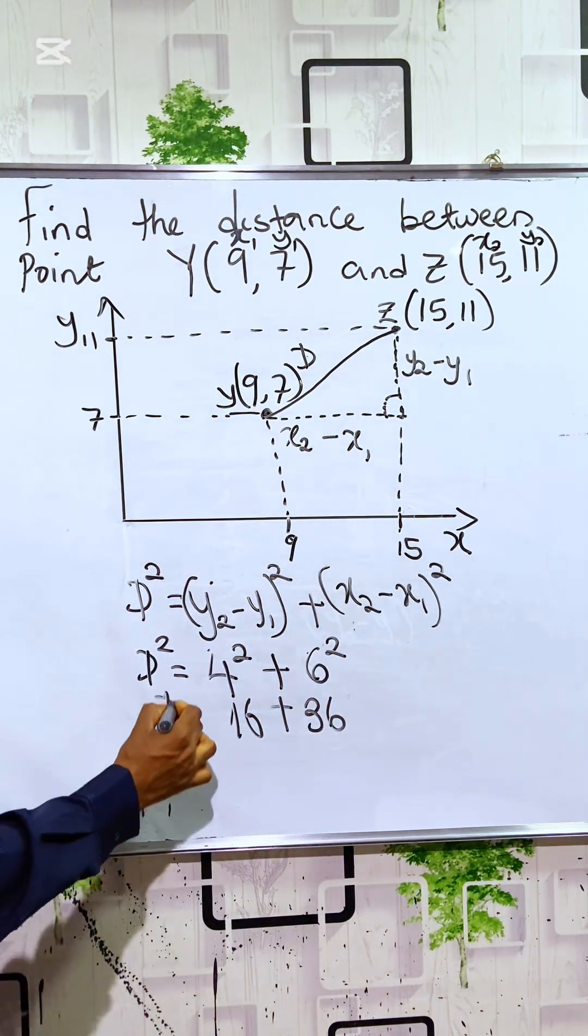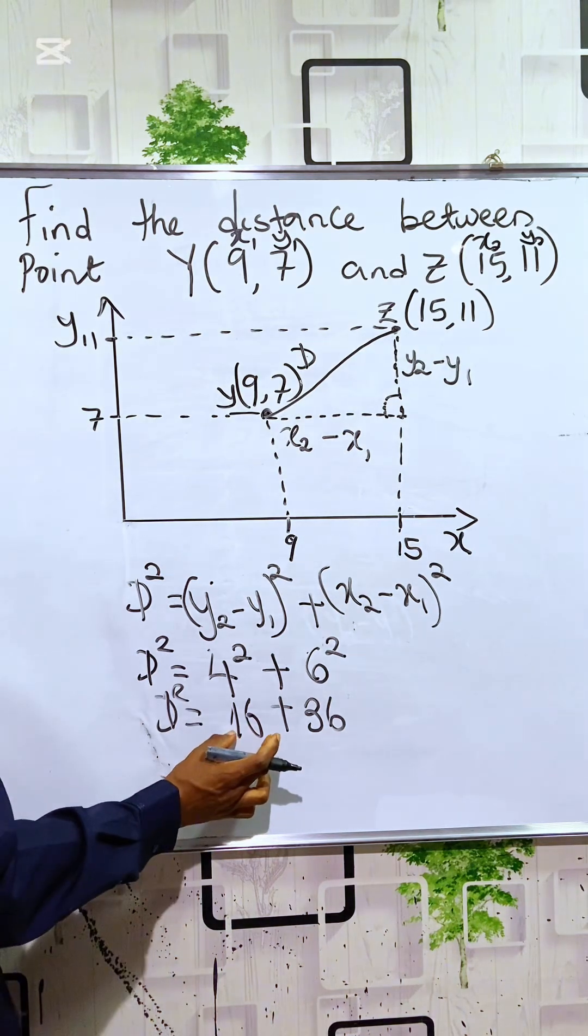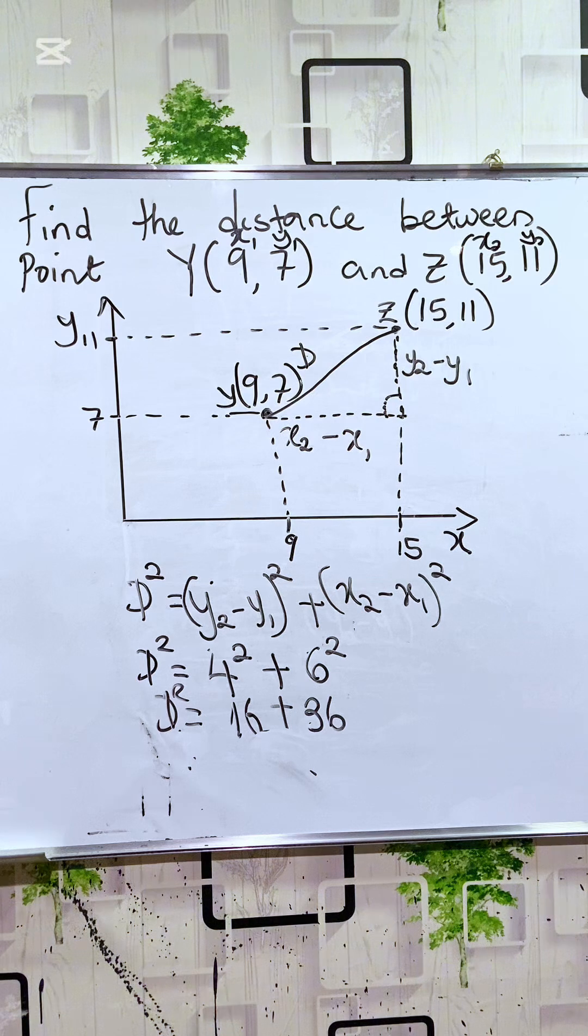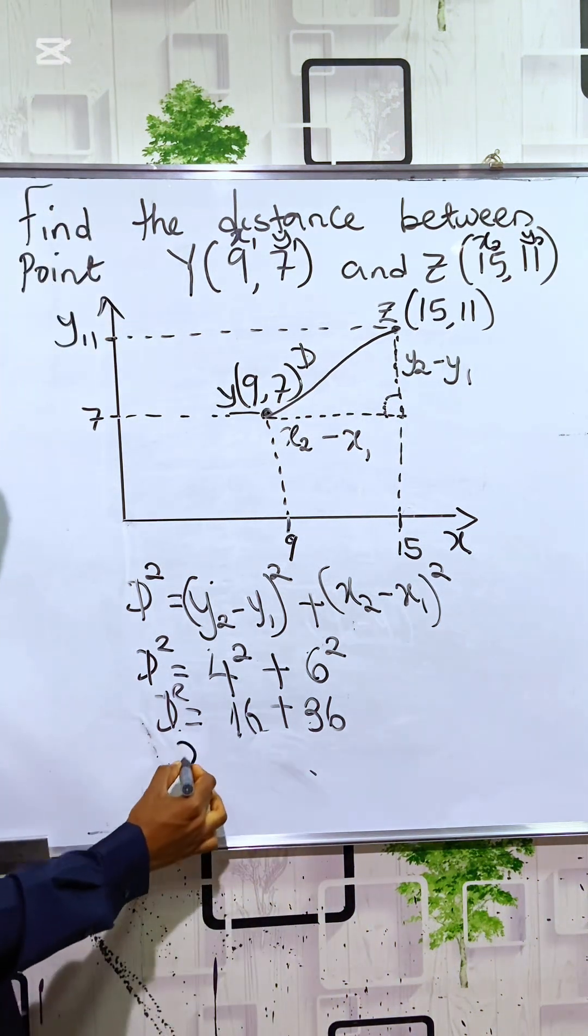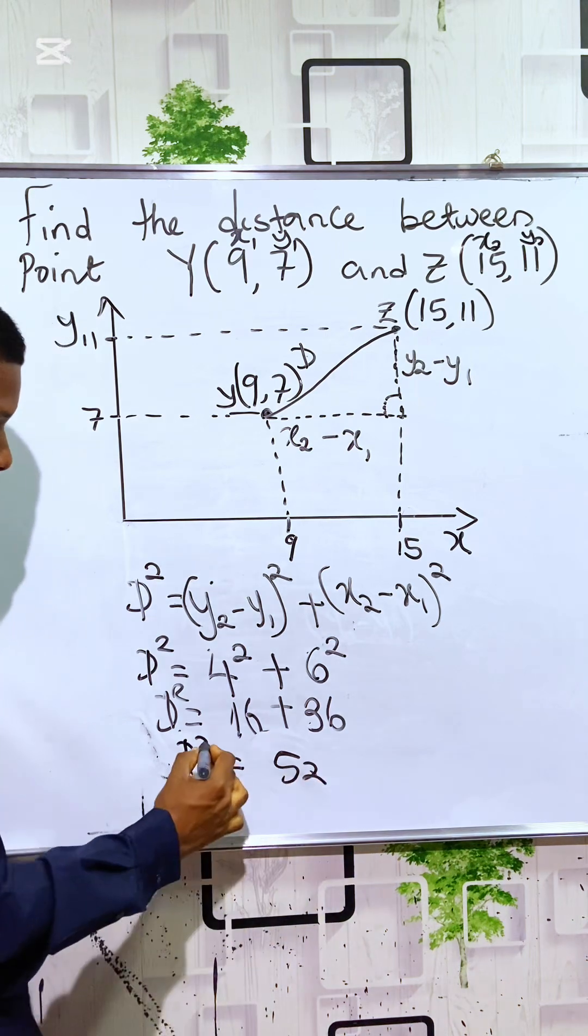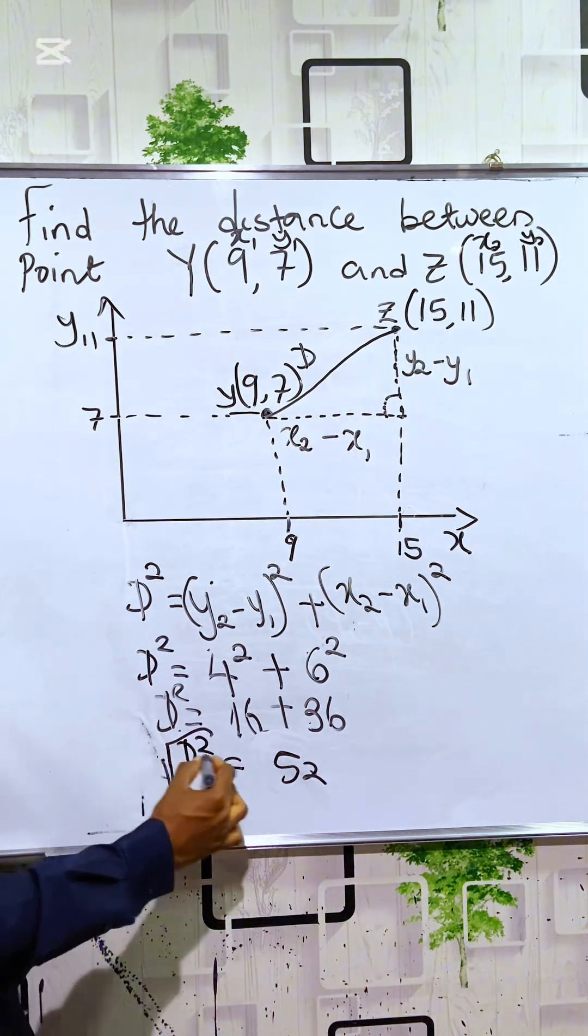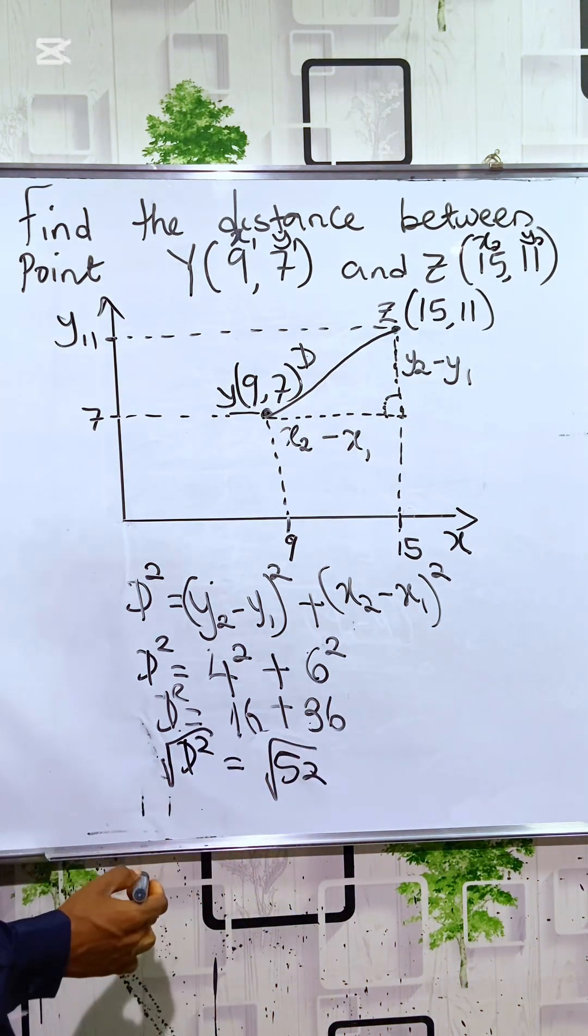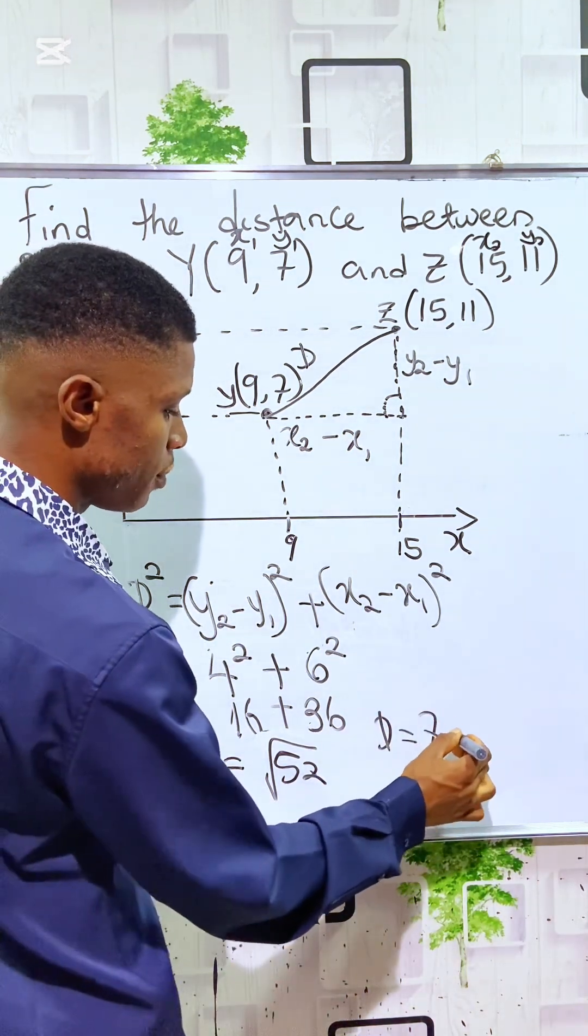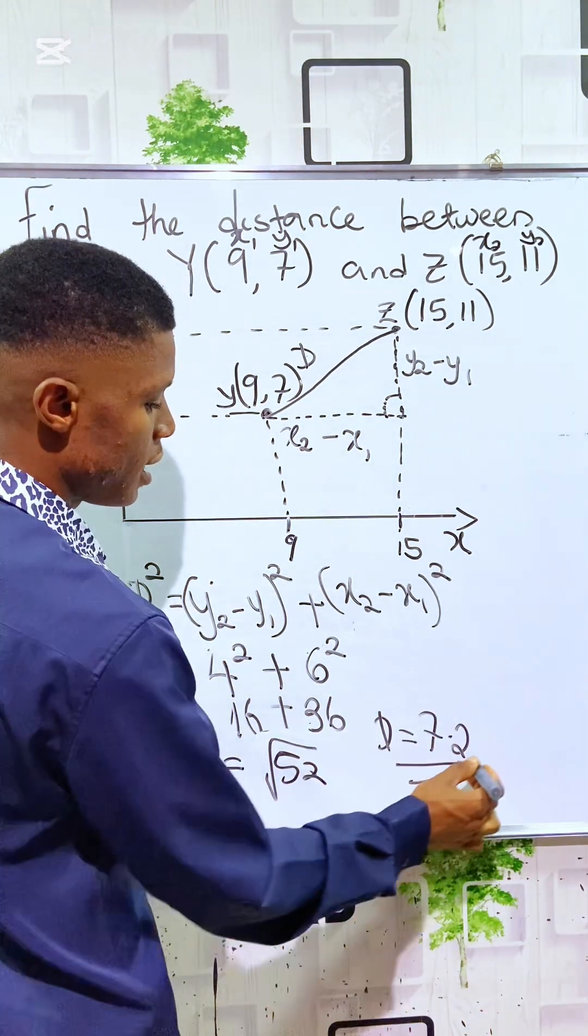So that's D squared basically. So if you add 16 to 36, you have it to be, okay, so D squared is equal to 52. To find D, just take the square root of both sides. If you take the square root of both sides, D is equal to 7.2, and that's D.